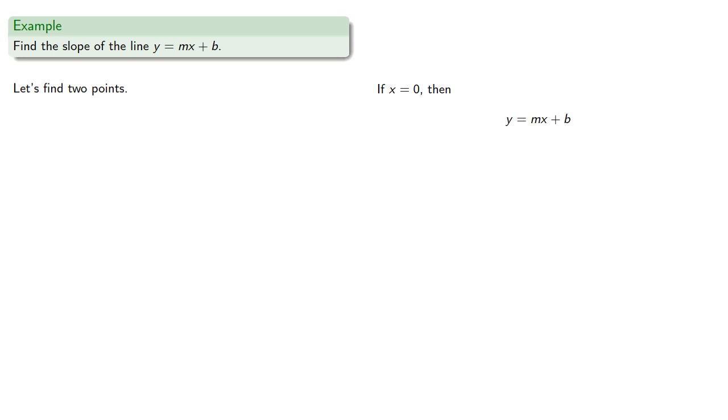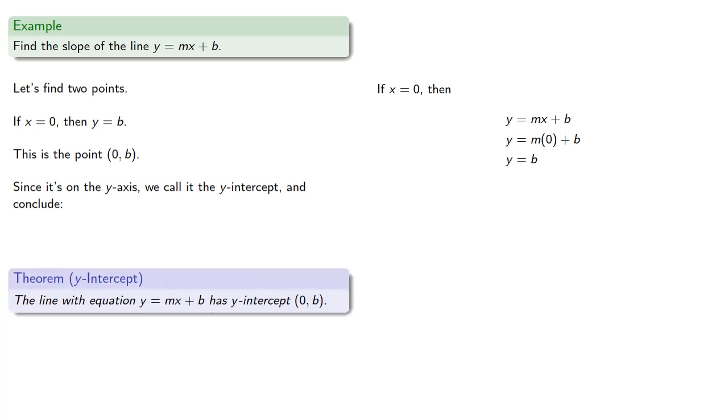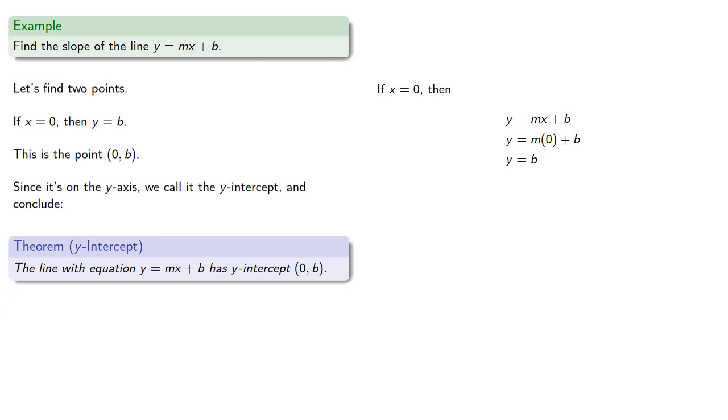If x equals 0, then we find y equals b, and so this is the point x equals 0, y equals b. Now, since this point is on the y-axis, we'll call it the y-intercept, and this allows us to conclude. The line with equation y equals mx plus b has y-intercept 0, b.